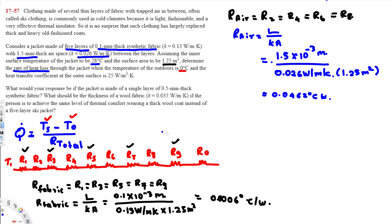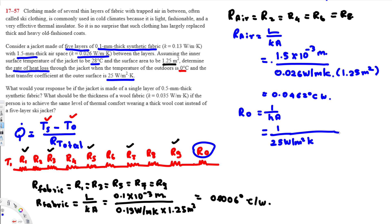We also have outside convection, so we use the convection resistance formula: R_conv = 1/(hA). The heat transfer coefficient is h = 25 W/m²·K and area = 1.25 m², giving R_conv = 1/(25 × 1.25) = 0.032°C/W.